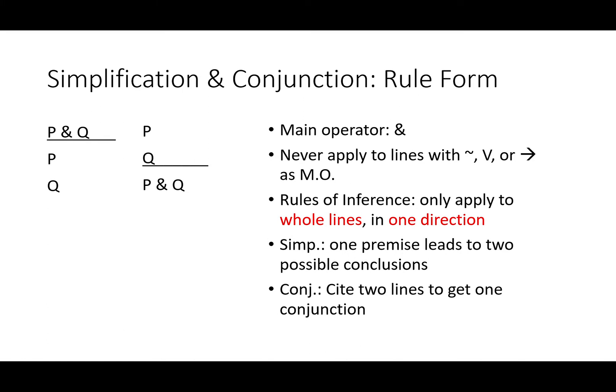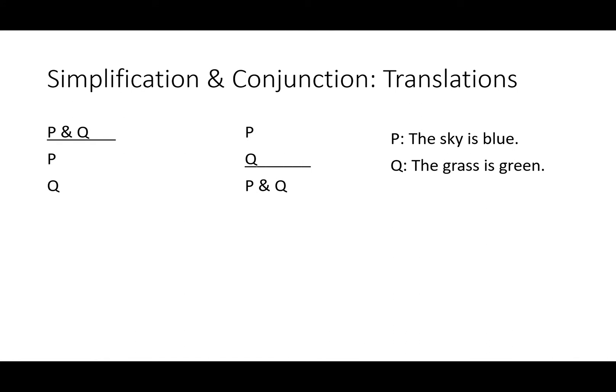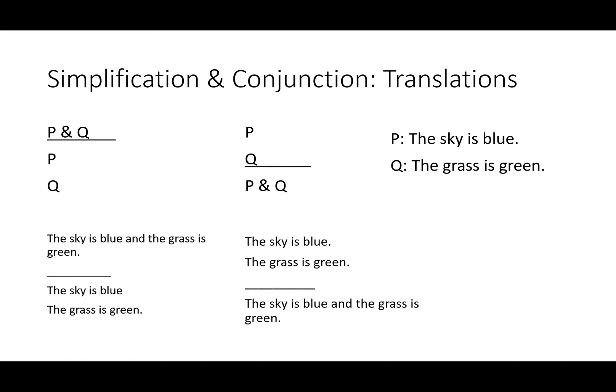Let's look at some translations to see how and why these rules work. Simplification: the sky is blue and the grass is green, therefore the sky is blue and the grass is green. With conjunction, we've got the sky is blue and the grass is green separately, therefore the sky is blue and the grass is green. Notice how the 'and' in English and the ampersand in symbolic logic track along together.